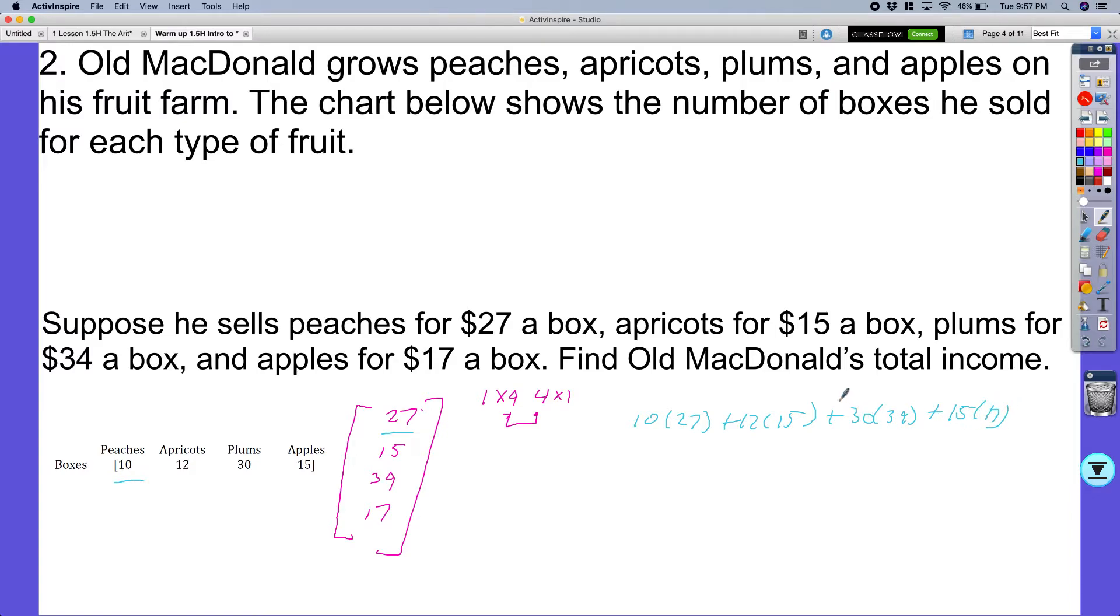And when I go ahead and solve that and I add those all together, I'll do the multiplication for it first. This would be 270 plus 180 plus 1020 plus 255. When I add those all together, I should get 1725. All right.